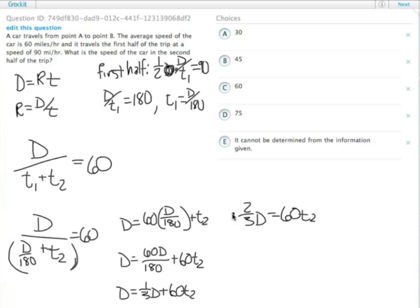We divide both sides by 60 because we're trying to isolate T2 on its own. So T2 equals two thirds D divided by 60. Two thirds D divided by 60 is the same as two thirds D times one over 60. And so then T2 equals D over 90.